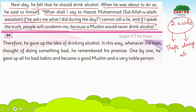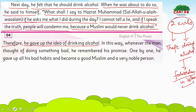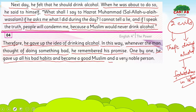Drinking alcohol is forbidden in Islam. So truthfulness kills two evils straight away. Whenever the man thought of doing something bad, he remembered his promise. One by one he gave up all his bad habits and became a good Muslim and a very noble person. Truthfulness is a very majestic power that kills all the evil habits of a person.